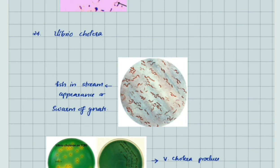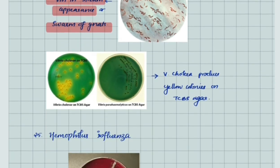Vibrio cholerae shows fish in stream appearance or swarm of gnats appearance. On TCBS agar, Vibrio cholerae produces yellow colonies. The TCBS agar itself is green, and Vibrio cholerae produces yellow colonies while Vibrio parahaemolyticus produces black colonies.